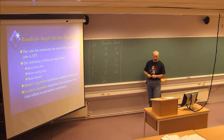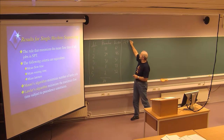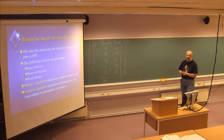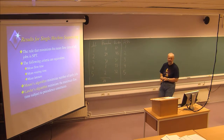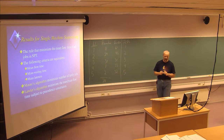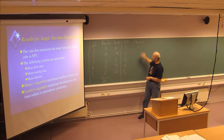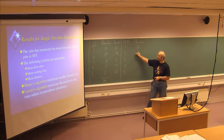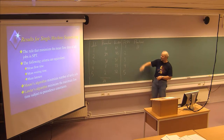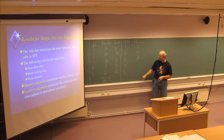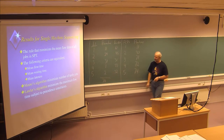We looked at the FCFS strategy, which gives the sequence 1, 2, 3, 4, 5. We then created a column for the completion time — when each job is finished according to this sequence. Job 1 takes 11 days. Job 2 starts next and is finished 29 days later, which is day 40. Job 3 takes 31 days, finished by day 71. Job 4 takes one day, finished by day 72. Job 5 takes two days, finished by day 74 — equal to the makespan.